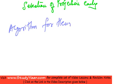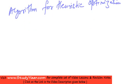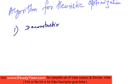This is basically not an algorithm but just a listing of heuristics for heuristic optimization. The first step is to deconstruct conjunctive selections.